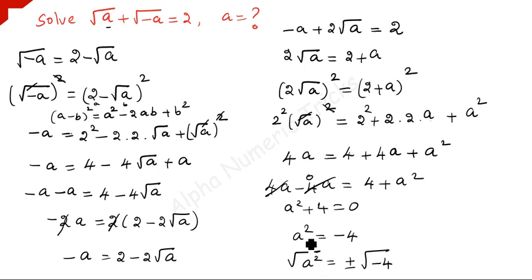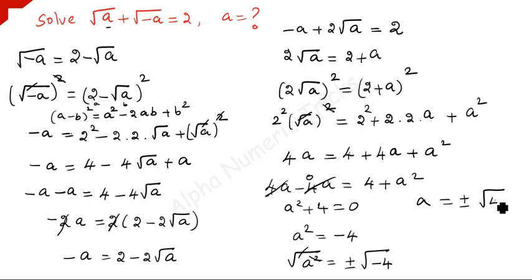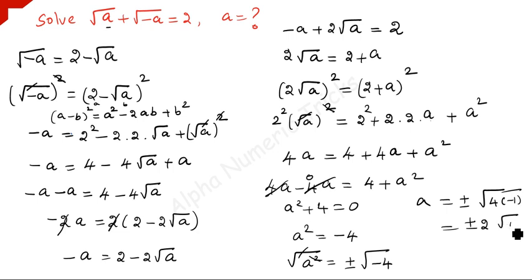Taking the square root: a equals plus or minus square root of 4 times minus 1. Square root of 4 is 2, and since minus 1 is i squared, we have a equals plus or minus 2i.